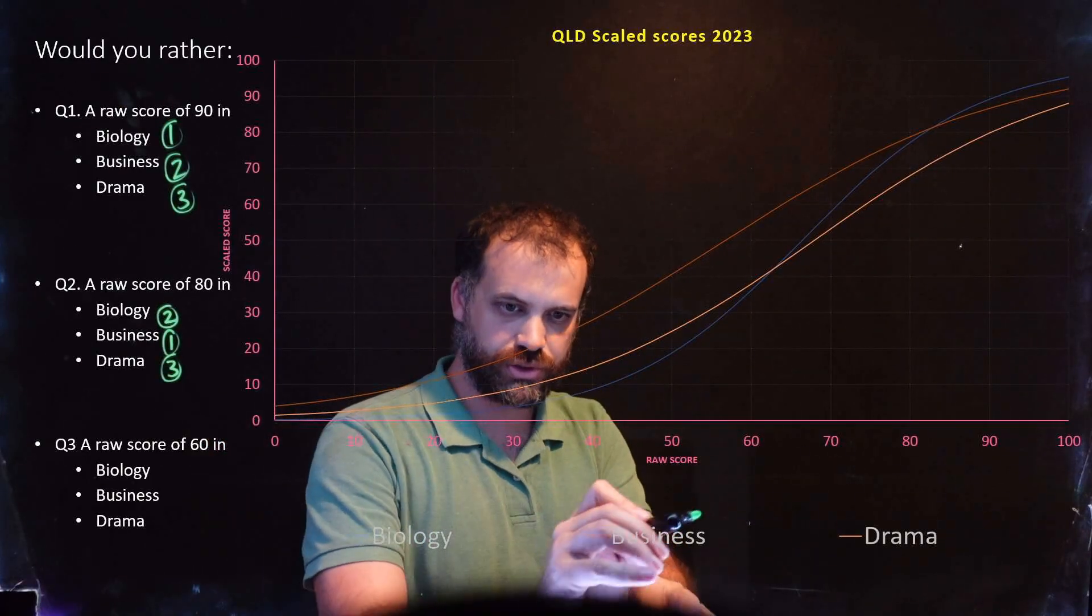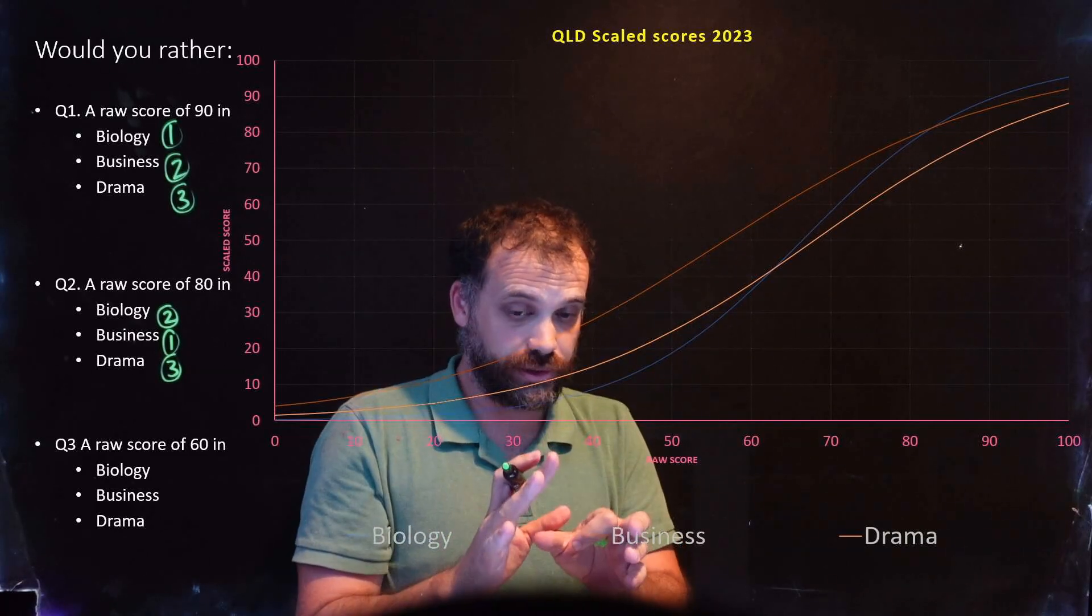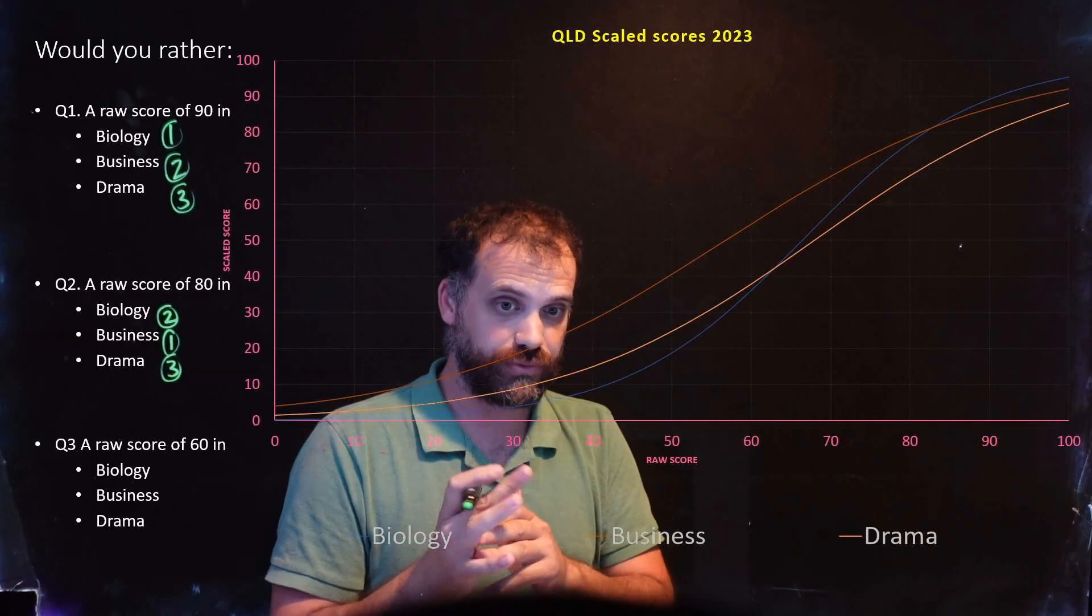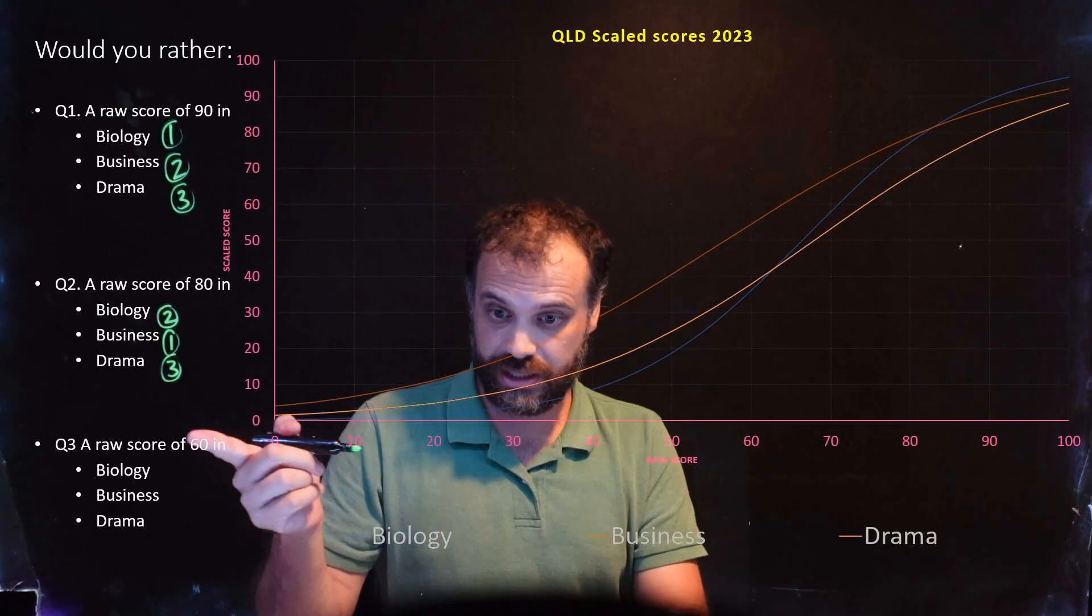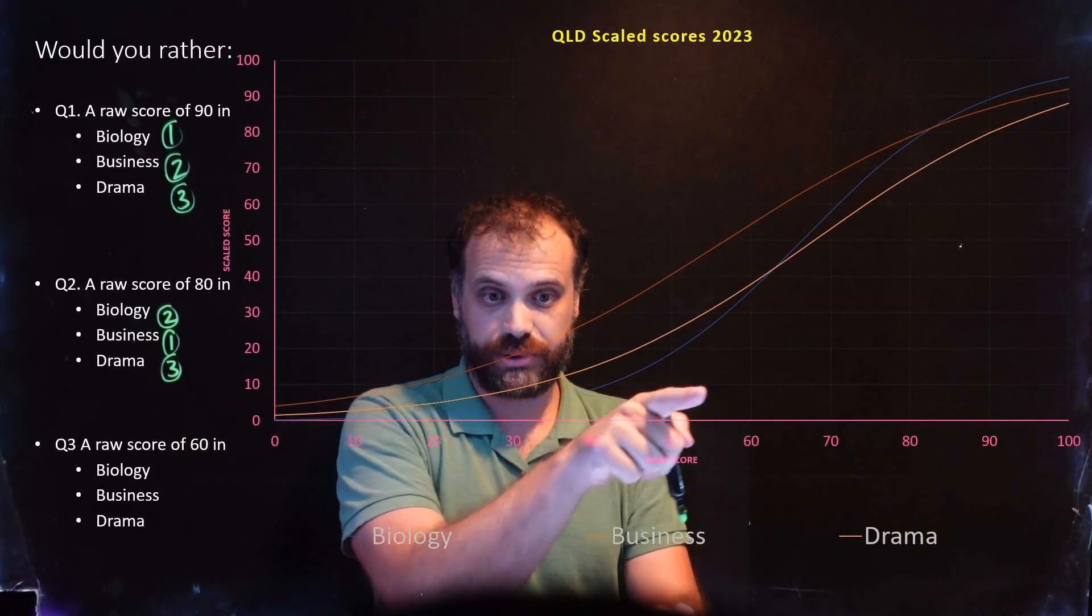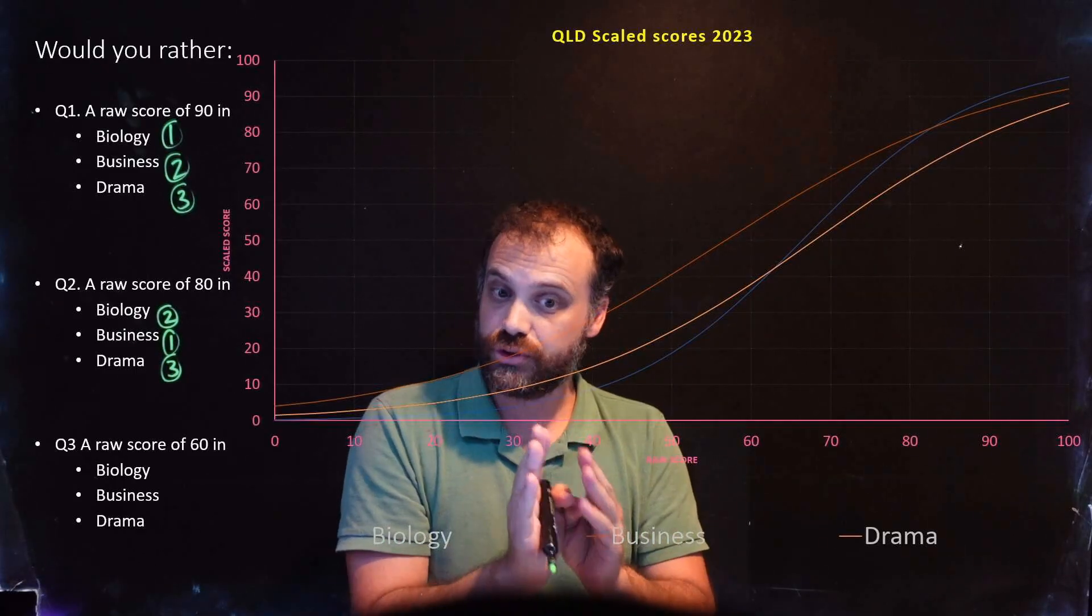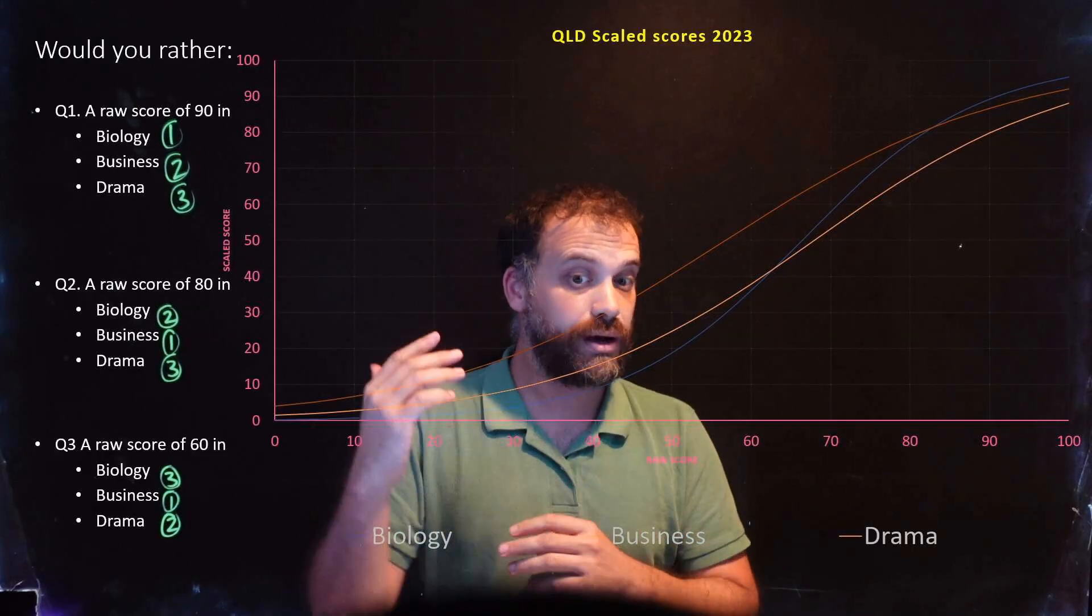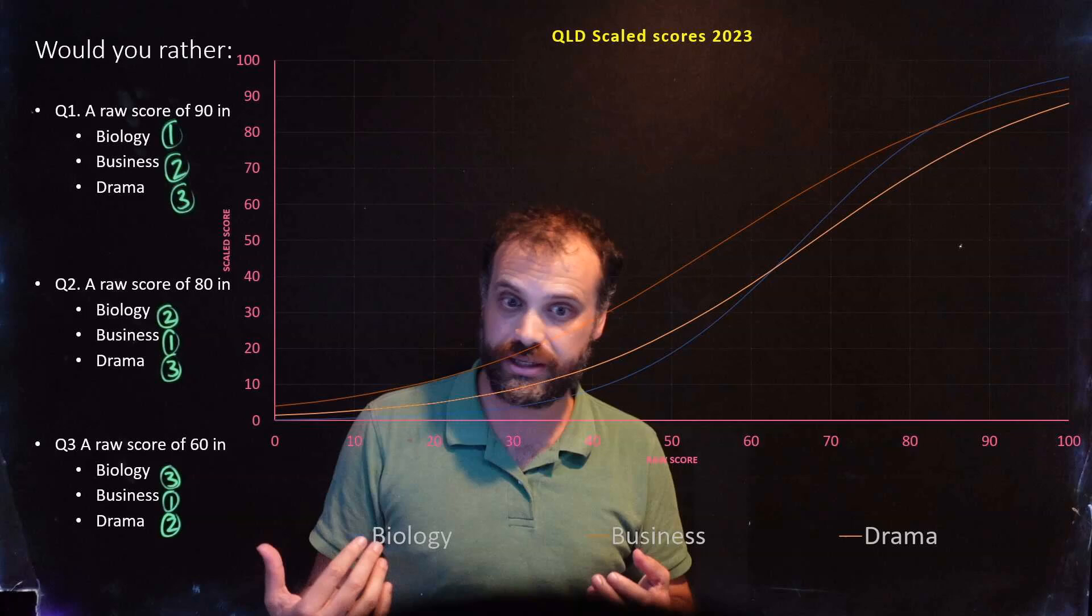And then what happens when we get to a score of 60? If we go up through here again, business is well clear now. Business is certainly what I would want to get if I'm going to get a score of 60. But, interestingly, if I'm going to get a score of 60 in any of these three subjects, I'd rather get it in drama than in biology. Because biology is scaling the worst out of these three subjects if you're scoring a score of 60.